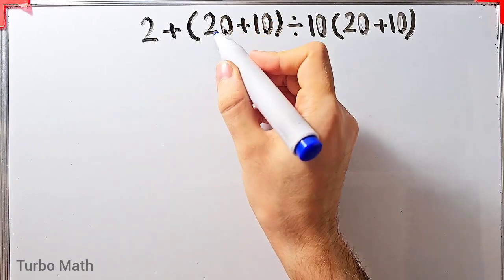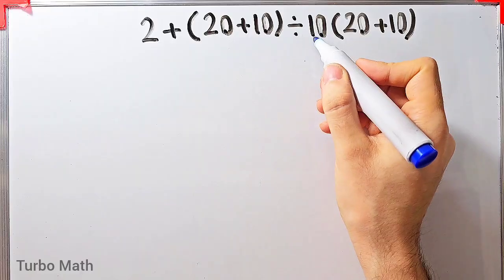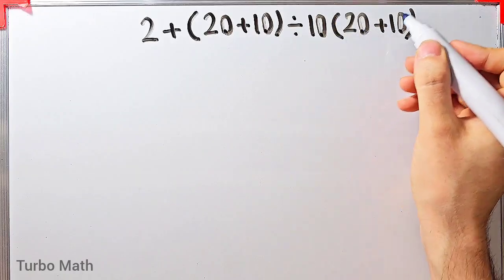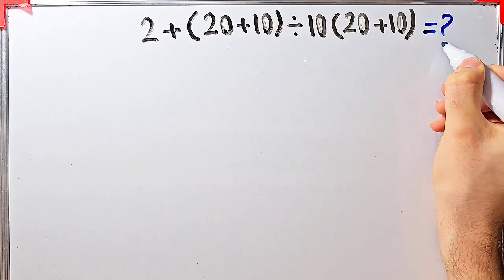2 plus open parentheses 20 plus 10 closed parentheses divided by 10, then times open parentheses 20 plus 10 closed parentheses. What is the answer of this question?